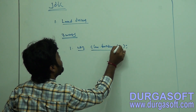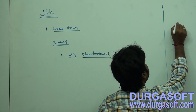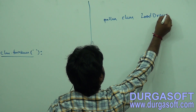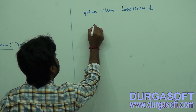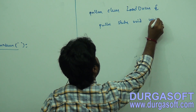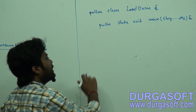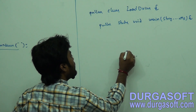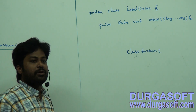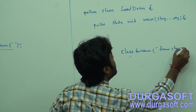Using Class.forName() method, we can load a driver. The class name is 'LoadDriver'. In the main method, write Class.forName() to load the driver into the JVM. You need to pass your driver class name here as the argument to Class.forName().